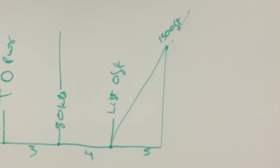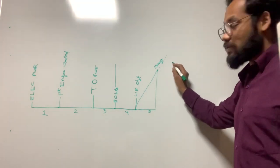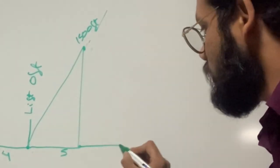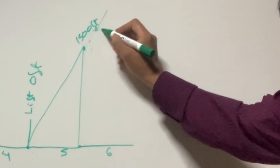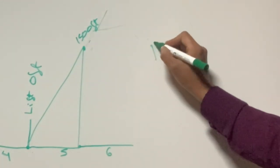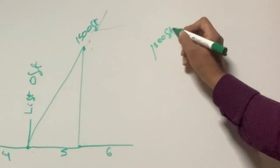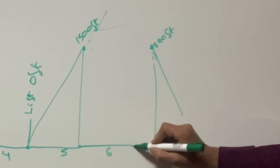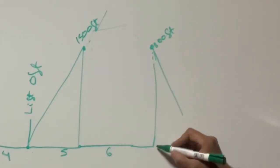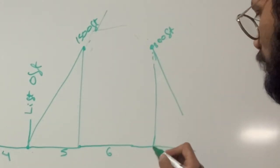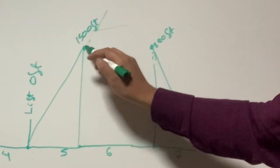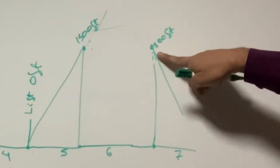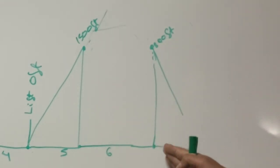Phase 6 starts after 1500 feet. After 1500 feet, what you will do is climb, cruise, descend — all those are phase 6. Phase 6 continues from 1500 feet through climb, cruise, and descent, until you descend to 800 feet. At 800 feet, your phase 6 ends and phase 7 starts.